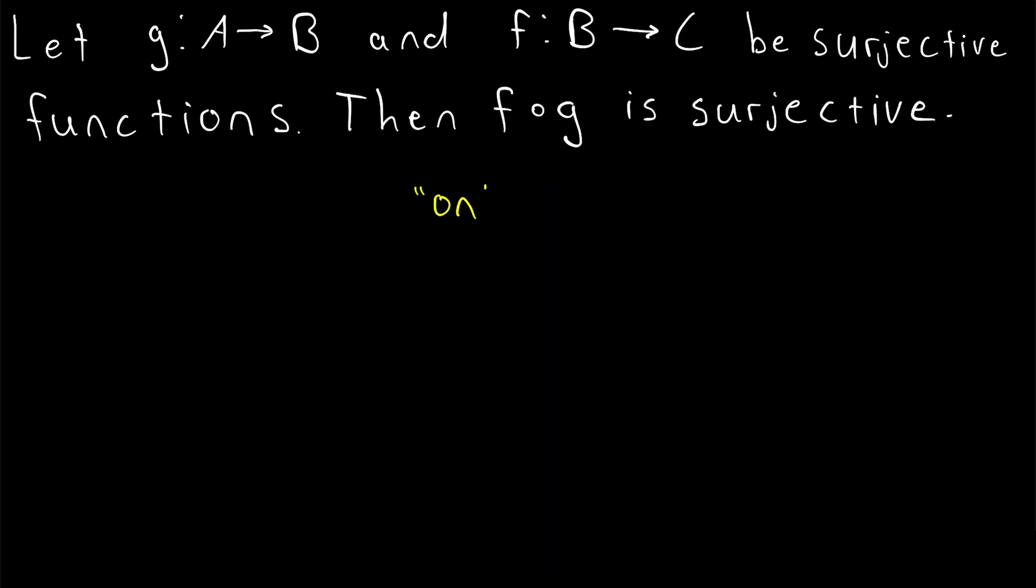Remember that surjective functions are also sometimes called onto functions. A function G, for example, is surjective or onto if for every element Y in the codomain B, there exists some element, we'll say X, in the domain that maps to that element Y.